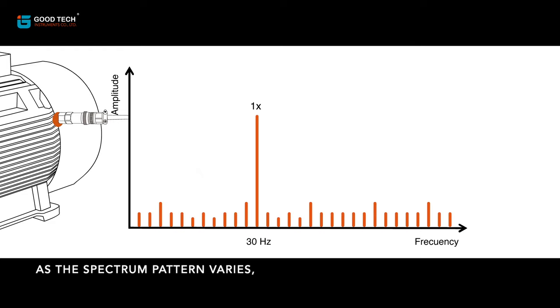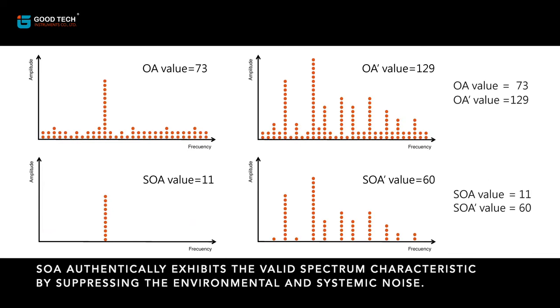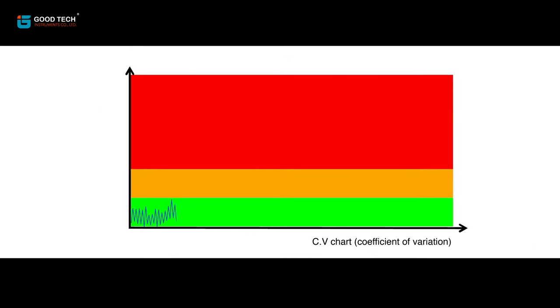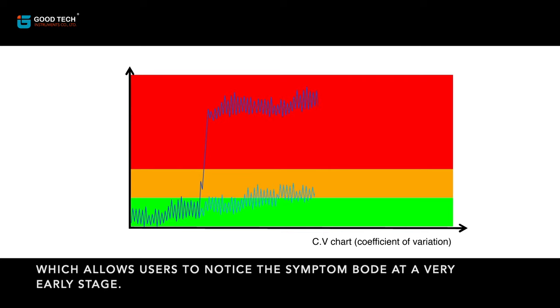As the spectrum pattern varies, SOA authentically exhibits the valid spectrum characteristic by suppressing the environmental and systemic noise. SOA value delivers a better resolution compared to conventional OA value, which allows users to notice the symptom at a very early stage.